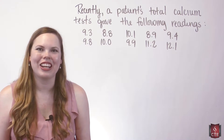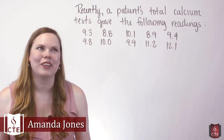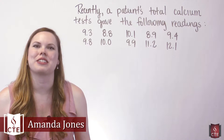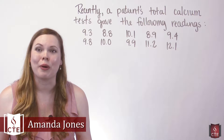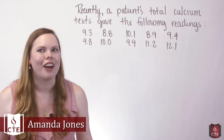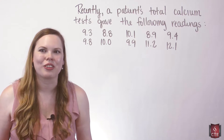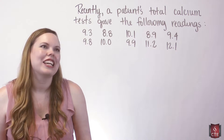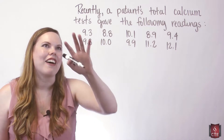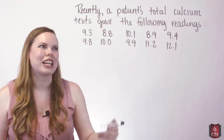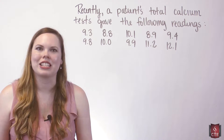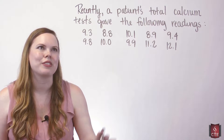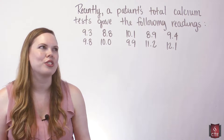We're going to look at measures of central tendency: the mean, the median, and the mode. There are others, but these are the three we're going to focus on in this class. I have a problem up here with some data that we are going to take those three measures of.